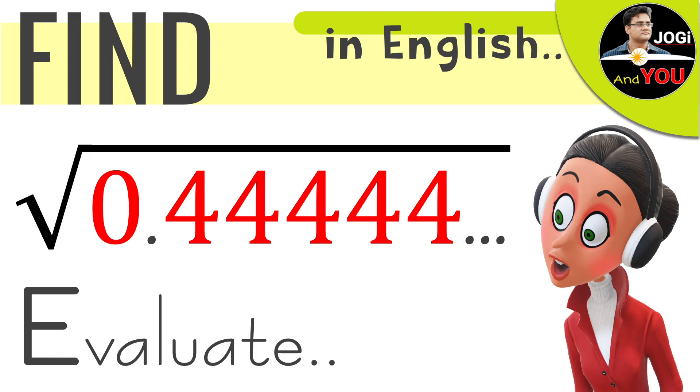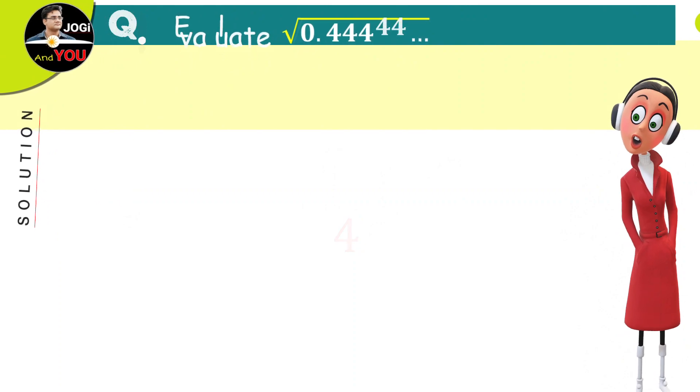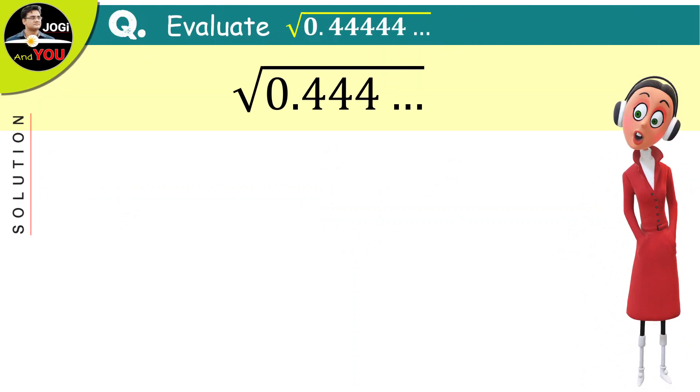In this, we will evaluate the resultant value to this given number which is under the radical sign. So, here is our query from which we have to extract the value. At the first look at this number, it is an infinitely repeated number under the root which is 0.444 dot dot dot till the infinite.